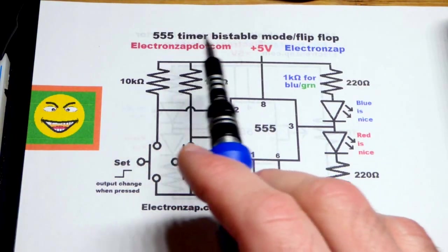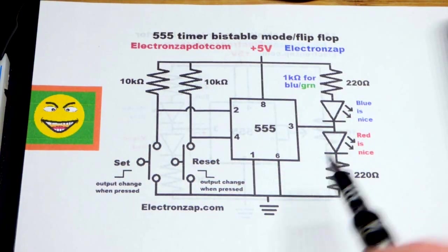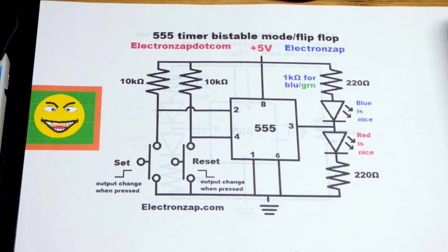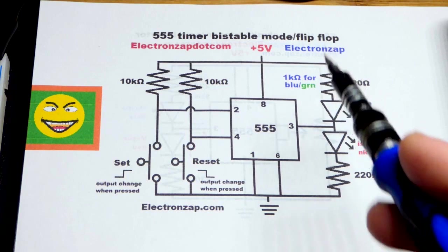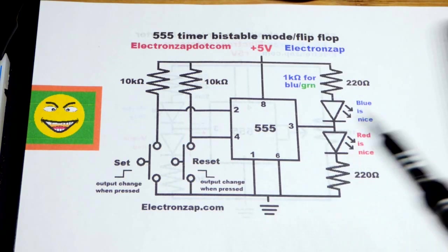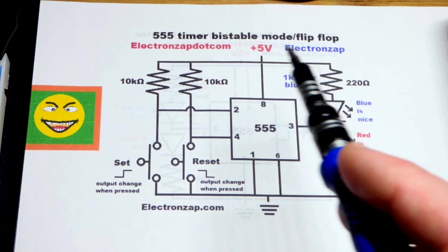Now in this video we're going to look at the 555 timer wired in bistable mode. You can also call it a flip-flop because it flips one way if you press one button and flops the other way if you press the other button. This is one of the three main modes.